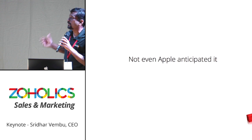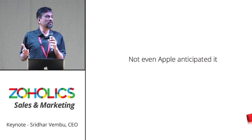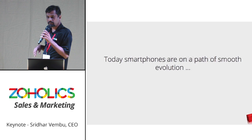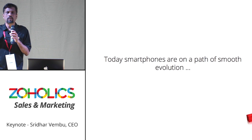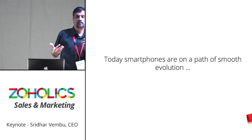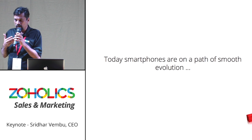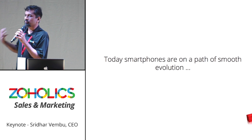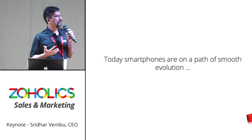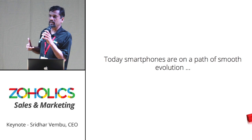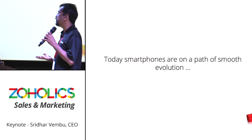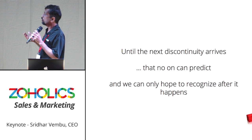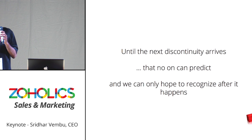That's a key point about discontinuity in technology — you cannot anticipate it. You hope to recognize it, and hope maybe you can survive it and take advantage of it. Now, back on smartphones, every year they are on the path of smooth evolution — things are getting better every year. You are on continuity again now: steady improvement, apps get better, more diverse variety of apps, speeds, display, 3D. All of this is continuity right now — until the next discontinuity arrives. We cannot know; no one can predict it. We can only hope to recognize it when it happens.